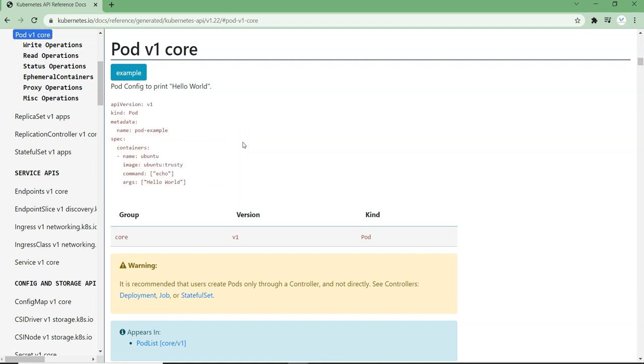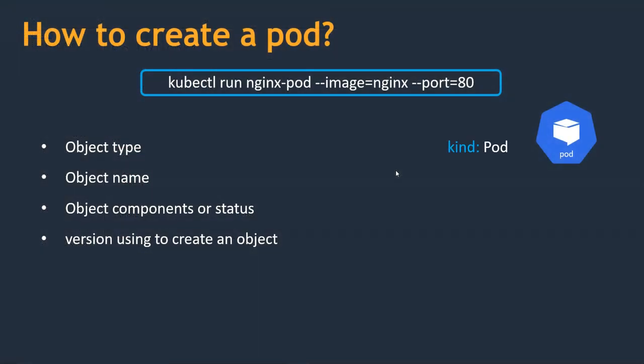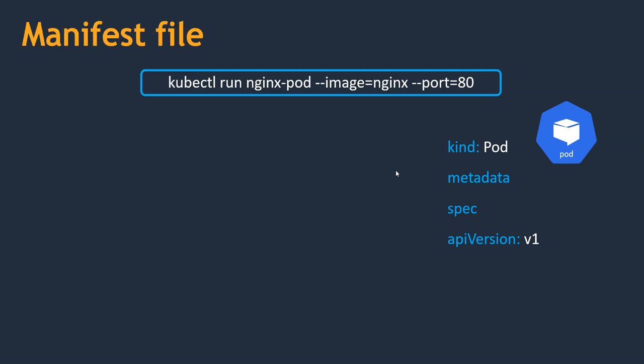Let's jump back to our presentation and understand more deeply how to write the manifest file. Object type (pod) is specified using the 'kind' key. Object name is specified using 'metadata'. Object status or specification is specified using 'spec'. And the version is specified using 'apiVersion' with the value v1. These are the parameters required to create a manifest file. One important thing to remember: manifest files are written in YAML format, which is a key-value pair format.